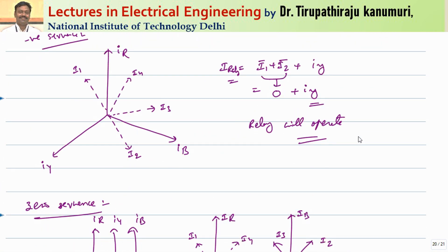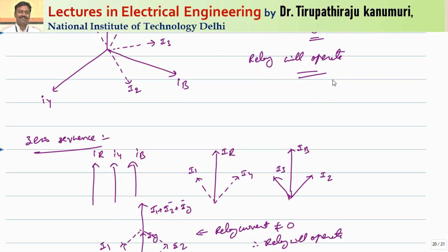For the negative sequence case: with negative sequence IR, Iy, IB — plotting I1, I4, I3, and I2 shows that I1 and I2 are in opposite directions, so their sum equals zero. The remaining component Iy passes through the relay, and the relay operates. Therefore, this circuit can detect and operate for negative sequence currents.